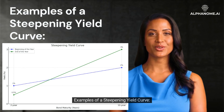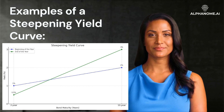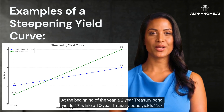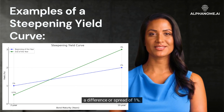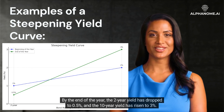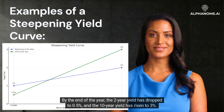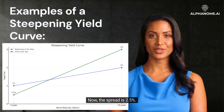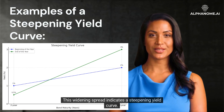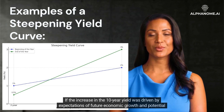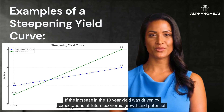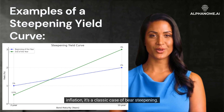Examples of a steepening yield curve. Consider a hypothetical scenario: at the beginning of the year, a two-year treasury bond yields 1% while a 10-year treasury bond yields 2%, a difference or spread of 1%. By the end of the year, the two-year yield has dropped to 0.5% and the 10-year yield has risen to 3%, making the spread 2.5%. This widening spread indicates a steepening yield curve. If the increase in the 10-year yield was driven by expectations of future economic growth and potential inflation, it's a classic case of bear steepening.